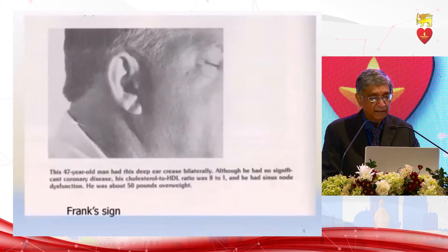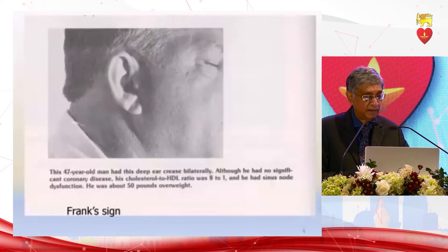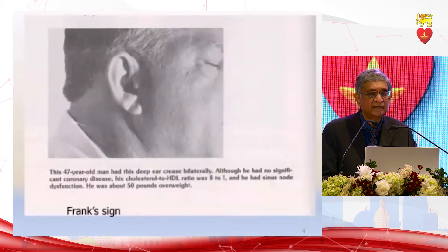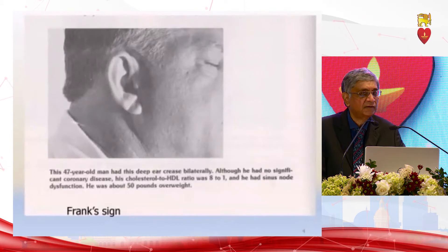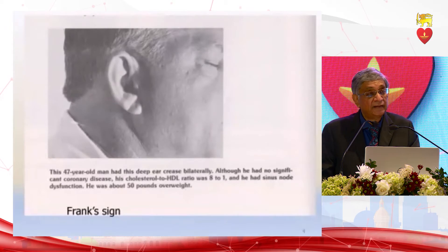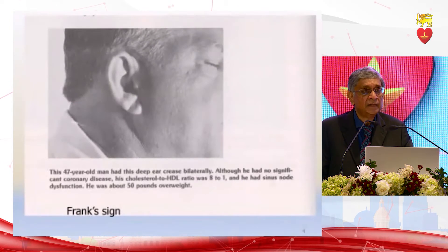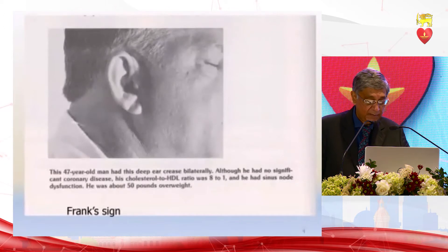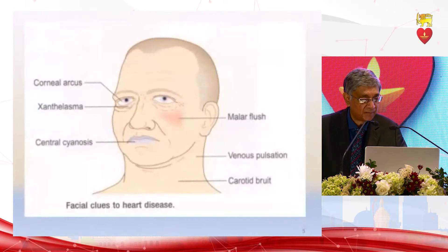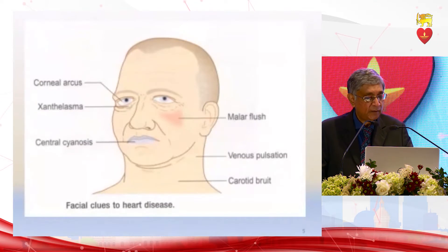This is the crease on the earlobe — a deep furrow called Frank's sign — associated with ischemic heart disease. Why this is so is not fully known, but the theory is that capillary malformations occurring in the microcirculation of the heart and in the earlobe may be contributing to this Frank's sign of ischemic heart disease. Continuing with the face, you look at the eyes and see the arcus and xanthelasma.